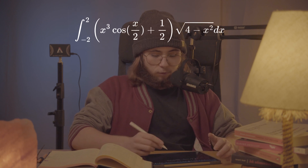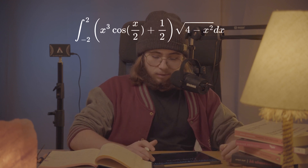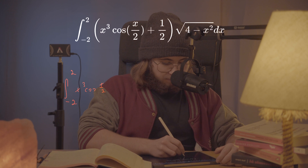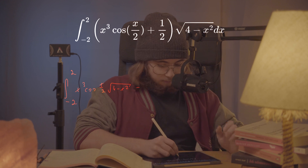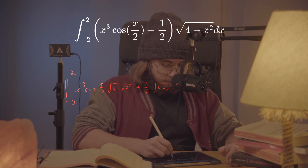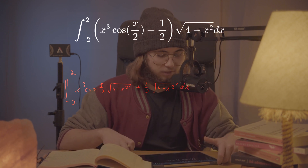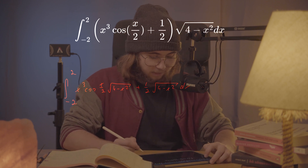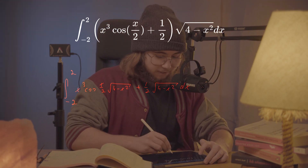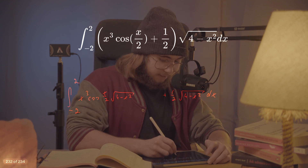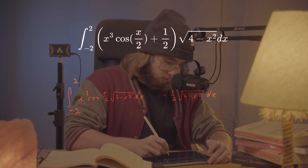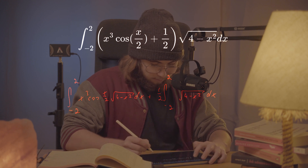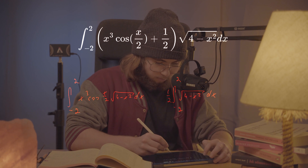First, I'd like to distribute this square root across the entire integral. What I get is the integral from negative 2 to 2 of x cubed times cosine of (x/2), multiplied by the square root of 4 minus x squared, plus one half times the square root of 4 minus x squared, dx. I'd like to split this into two separate integrals, pulling the one half in front of the integral on the right-hand side.